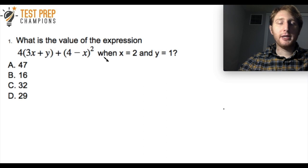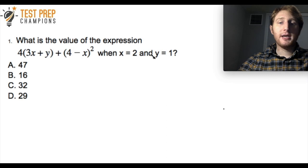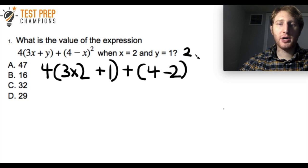Let's go over this question. When it says x = 2, all that means is that everywhere you see an x, you replace it with a 2. And everywhere you see a y, you replace it with 1. So let me rewrite this question after substituting: we have 4(3×2 + 1) + (4 - 2)². The next thing to understand is the order of operations rules.